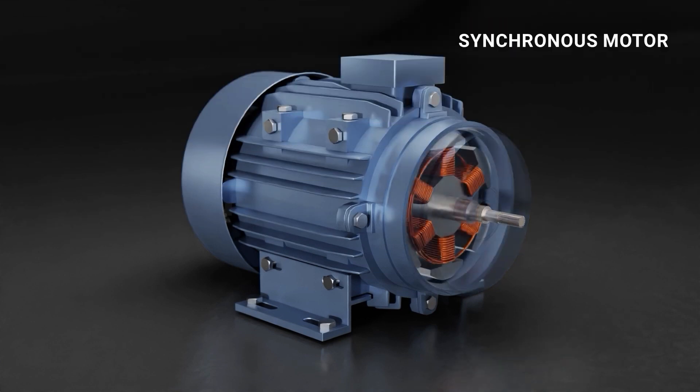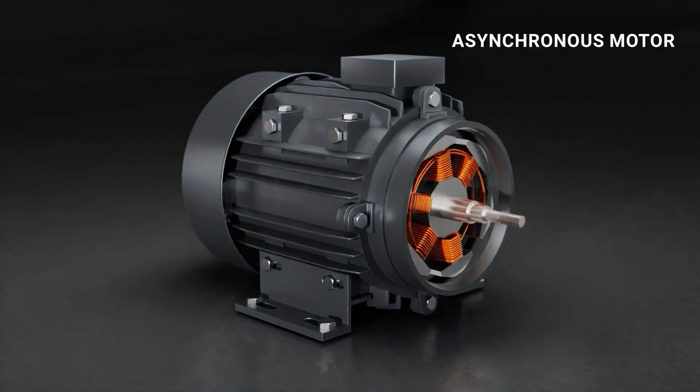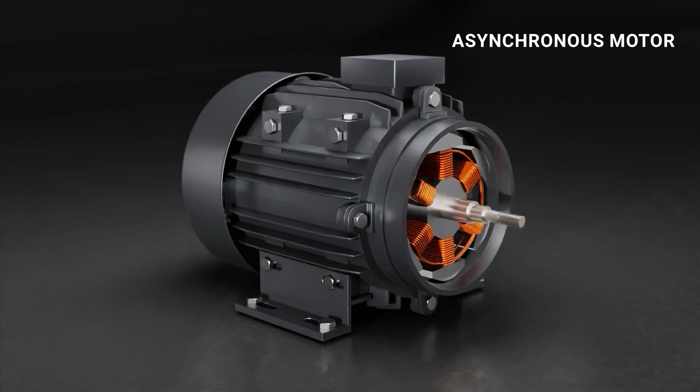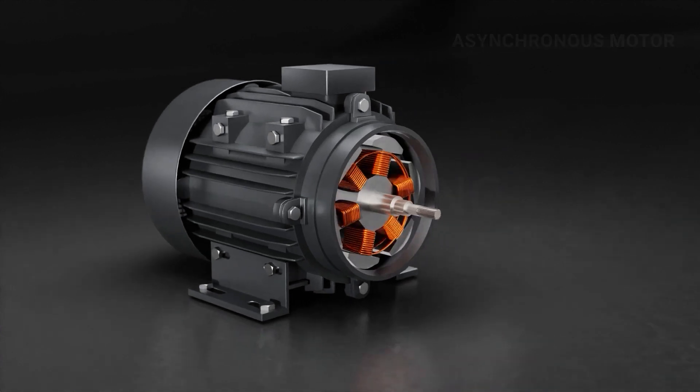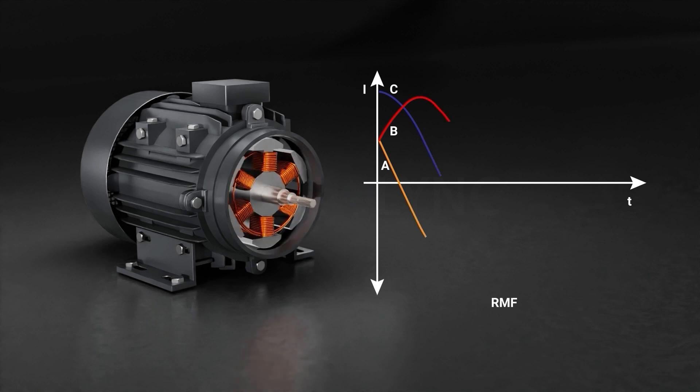While the permanent magnet synchronous motor rotates at the same speed as the frequency of current, the rotor of the induction motor rotates at a speed less than the frequency of current. This makes it an asynchronous motor. The stator receives an AC input and generates a rotating magnetic field, also known as RMF. This RMF makes the rotor, which is surrounded by a squirrel cage, rotate.